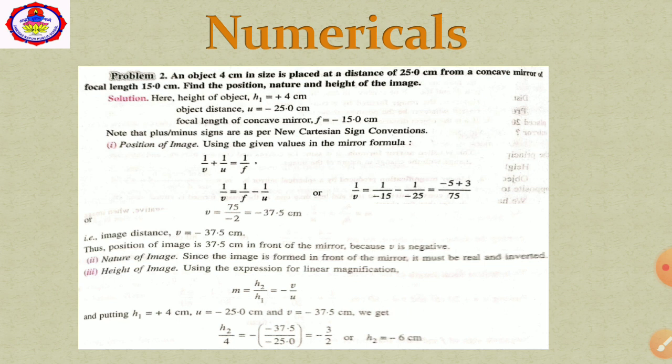Try one more numerical. An object 4 cm in size is placed at a distance of 25 cm from a concave mirror of focal length 15 cm. Find the position, nature, and height of the image. H1 equals +4 cm, U equals −25 cm, and F equals −15 cm (concave mirror, focus on left). Putting these values into the mirror formula gives V equals −37.5 cm. The negative sign shows the image is real and inverted, formed in front of the mirror. Using the magnification formula, the image height comes out to be −6 cm.